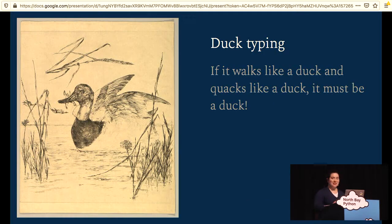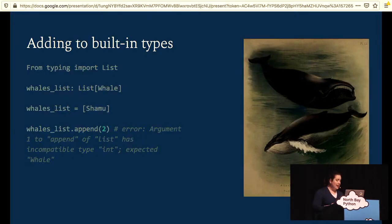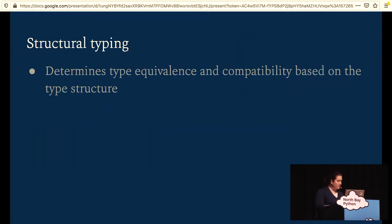So in Python, we also have what's called duck typing. And it means that in order to be compatible, types have to pass what's called the duck test. So if it walks like a duck and it quacks like a duck, it must be a duck. And this means that type compatibility is determined by looking at the methods on the classes that are accessed at runtime. You're not looking at what the classes inherit from or what their names are. You can also add to built-in types in Python. Built-in types can be used to define more complex ones. So for instance, here I'm creating a list that only accepts whales. If I try and add an integer to this list, MyPy is going to yell at me and tell me I can't.